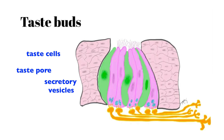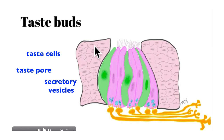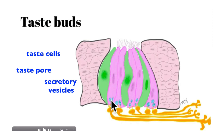So the taste bud is composed of the stratified squamous of the papilla, microvilli of the taste cells, supporting cells, secretory vesicles with signaling molecules, and the associated neurons.